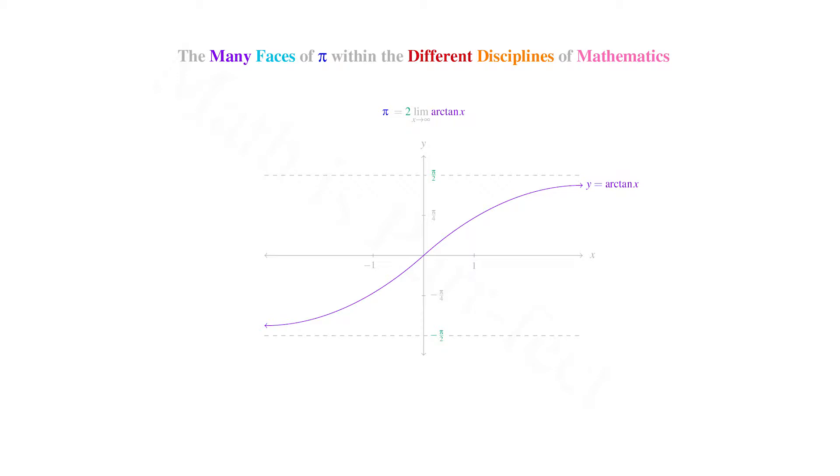We next proceed into the heart of calculus with a McLaren series. We know that a function f of x, which is infinitely many times continuously differentiable, can be written as the sum, as our index n begins counting at zero and increases without bound, of the nth derivative of f at zero divided by n factorial, quantity times x to the n. Let us consider the function from our last definition for pi, namely, arc tangent of x.